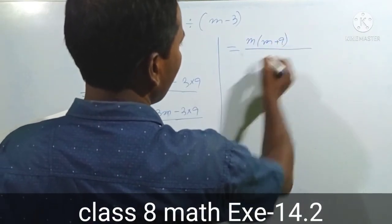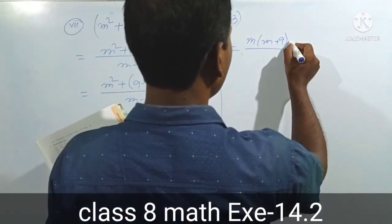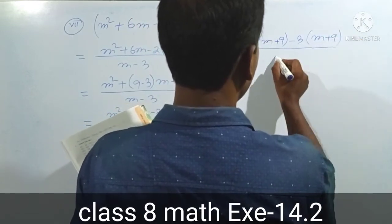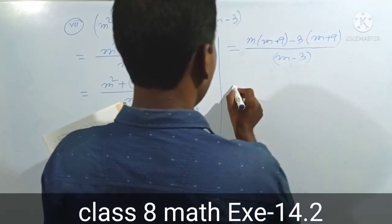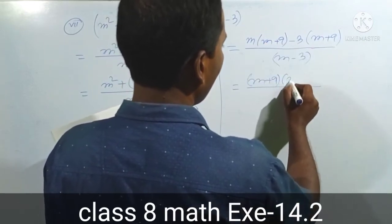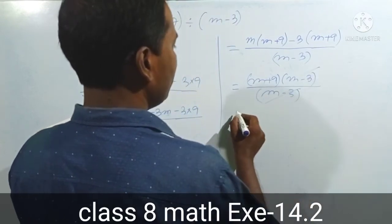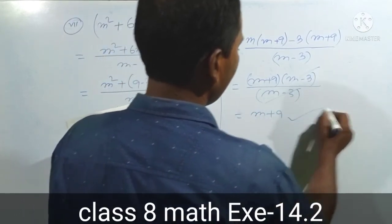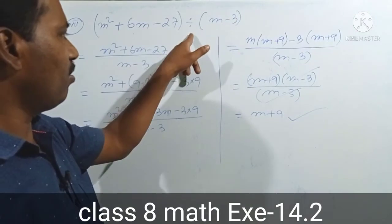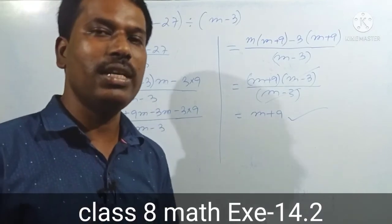Taking m as common from m plus 9, and minus 3 as common from the remaining terms, we get m minus 3. So we get m minus 3, and then we get m plus 9. Therefore m squared plus 6m minus 27 equals m minus 3 times m plus 9.